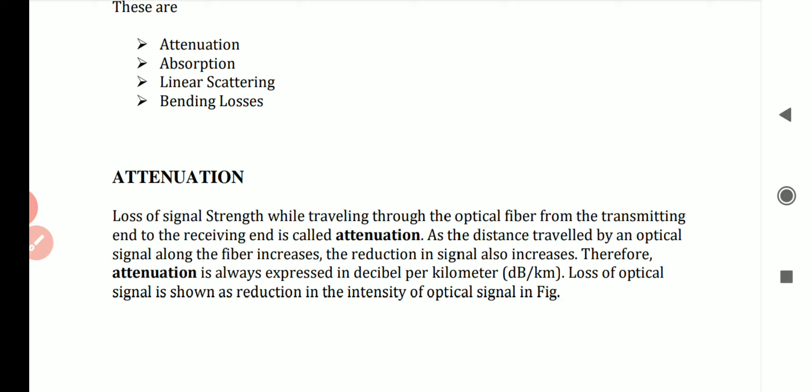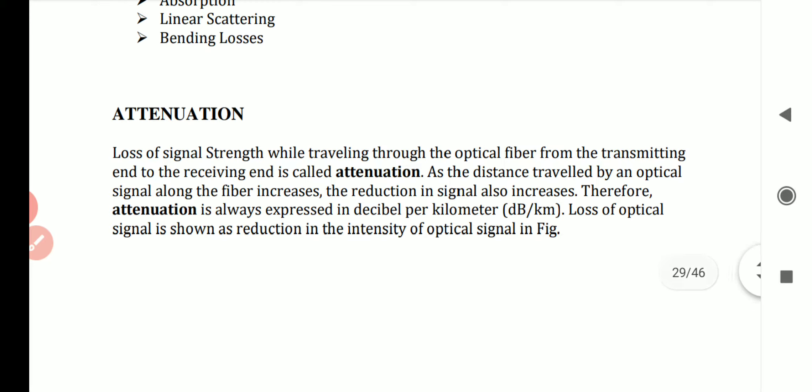Attenuation has several adverse effects: it affects the system bandwidth, information transmission rate, efficiency, and overall system capacity. As the distance traveled by an optical signal along the fiber increases, the reduction in signal also increases. Therefore, attenuation is expressed in decibels per kilometer (dB/km).